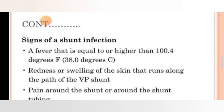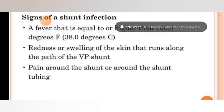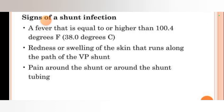Signs of a shunt infection include: a fever equal to or higher than 100.4 degrees, redness or swelling of the skin along the path of the VP shunt, and pain around the shunt or around the shunt tubing.